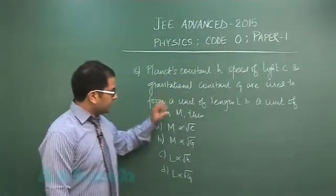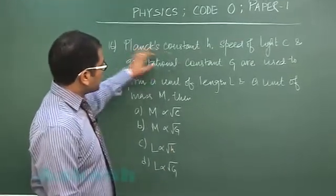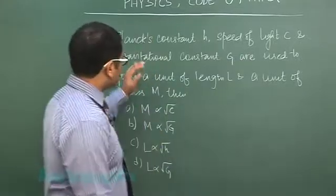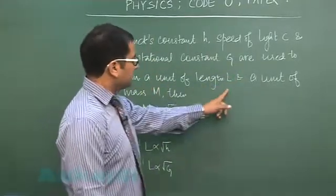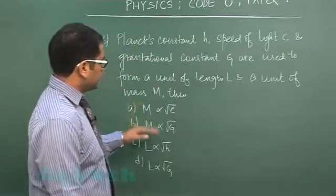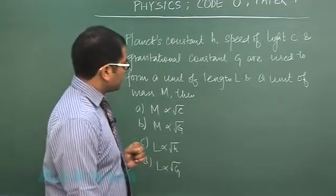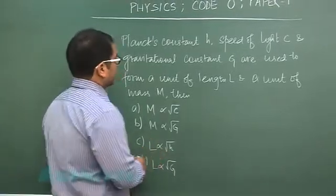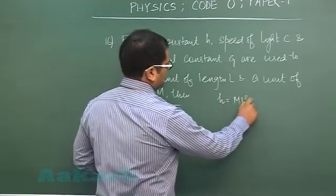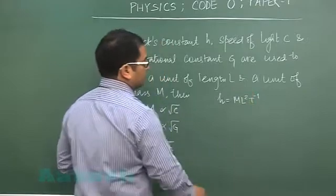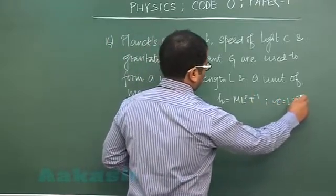Question number 16 is from units and dimensions, where Planck's constant h, speed of light c, and gravitational constant g are used to form a unit of length and a unit of mass. First, let us see the dimensions of Planck's constant, which would be energy by frequency: m l square t minus 1.